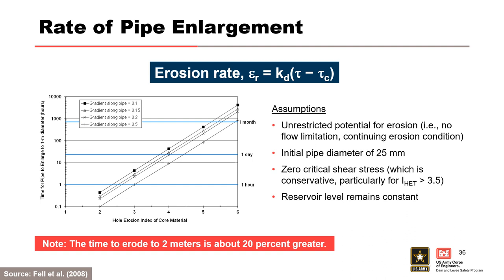The rate of pipe enlargement in the progression phase is characterized by the erodibility coefficient. Based on hole erosion results, this figure shows the approximate time for a pipe to enlarge from 25 millimeters to 1 meter in diameter as a function of erosion resistance and hydraulic gradient based on the assumptions shown. Erosion resistance increases from left to right. The approximate time to erode to 2 meters is about 20% greater. Even in the most resistant of soils, enlargement occurs in only 100 to 500 hours, somewhere between 4 days to 3 weeks.